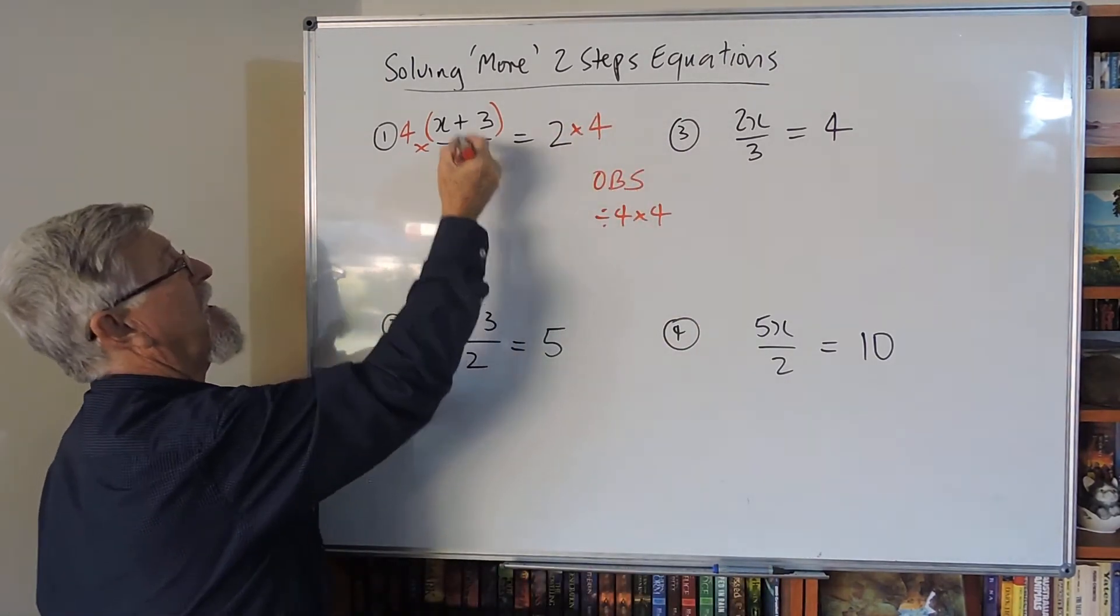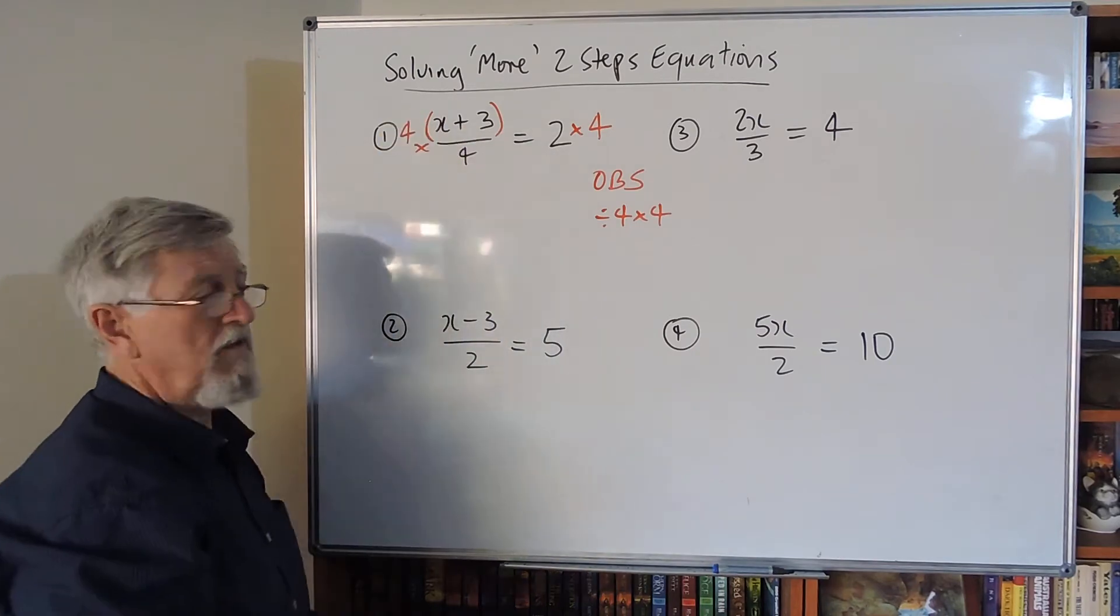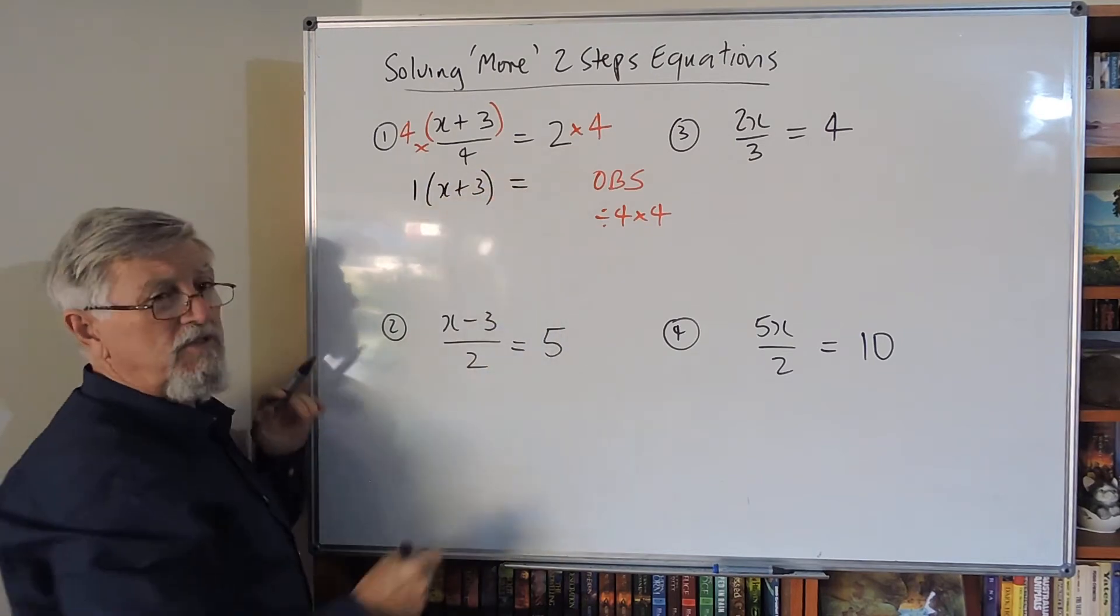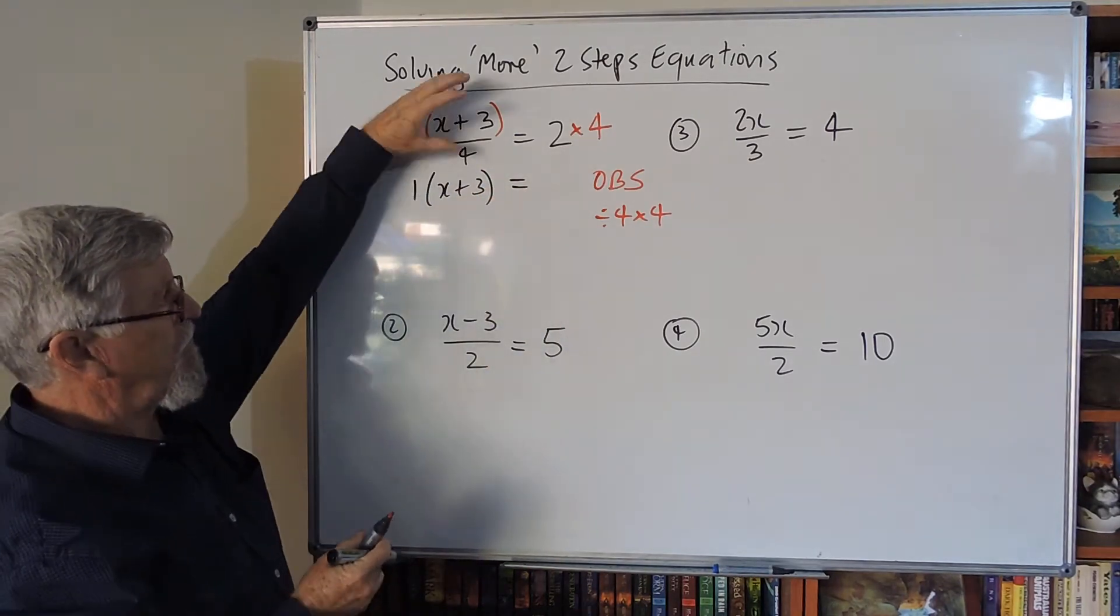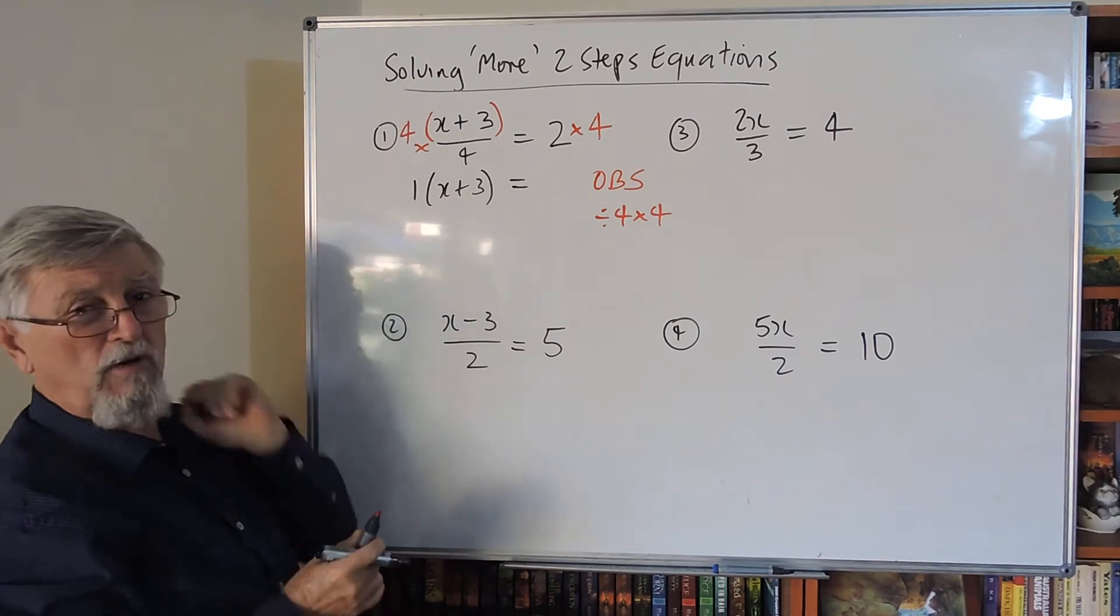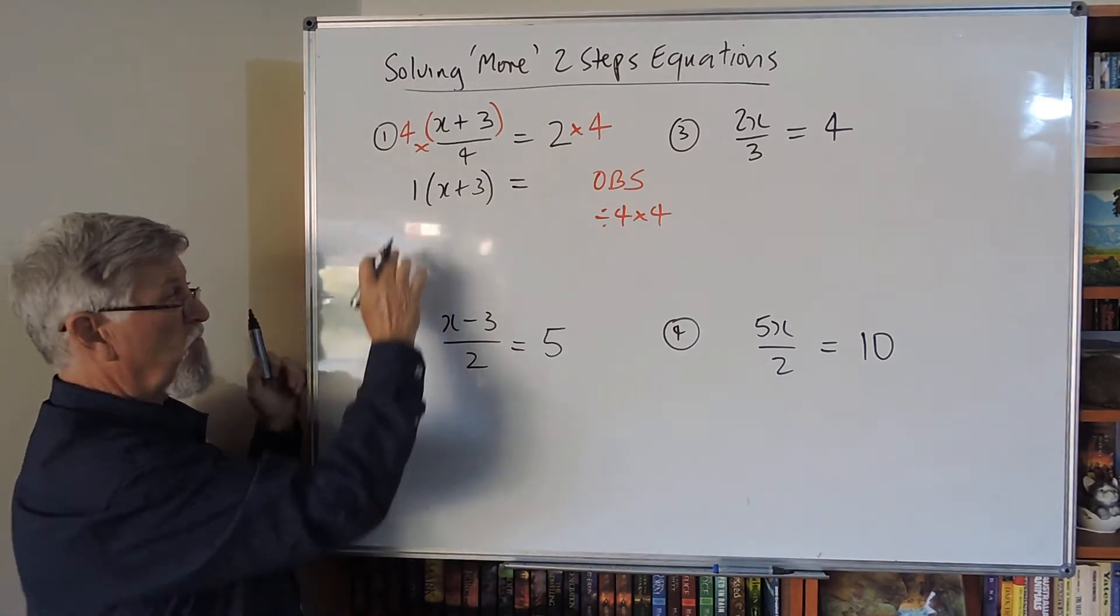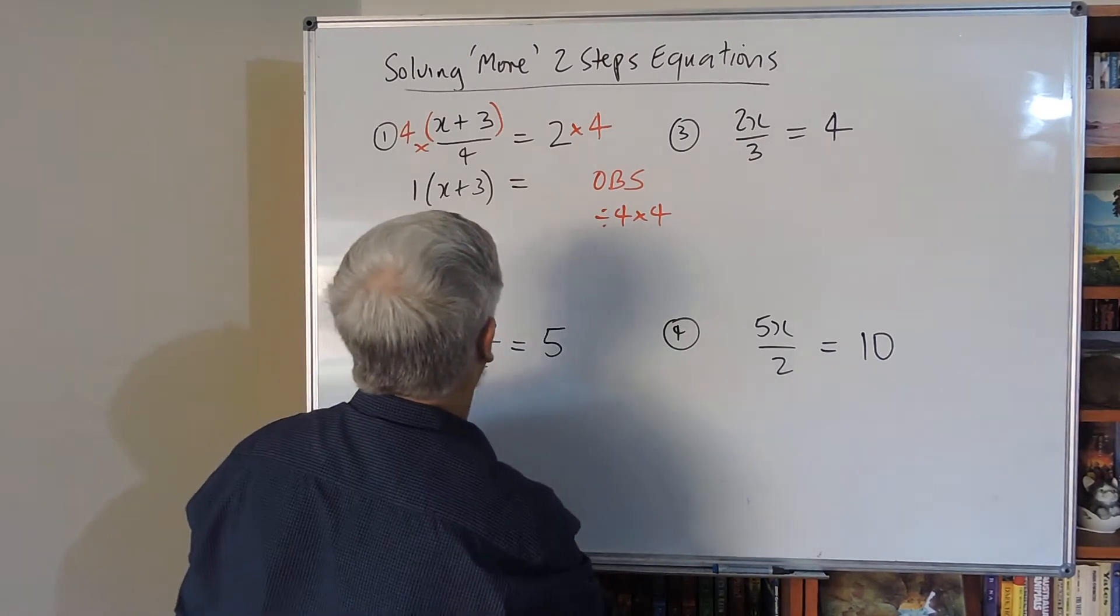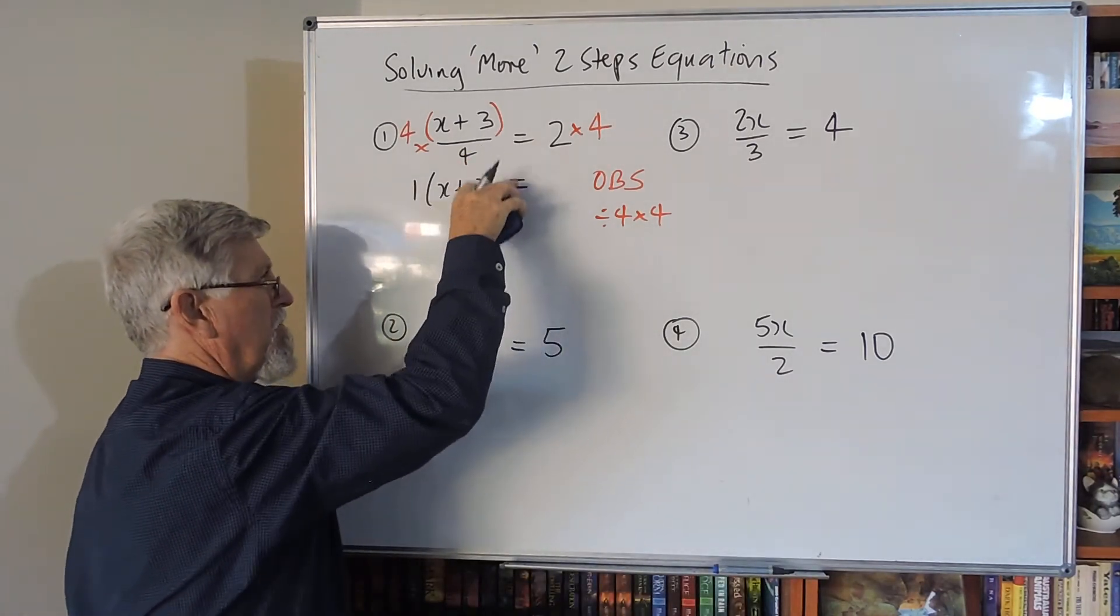And the purpose of it was I can then go four into four goes once, so really I've got one bracket (x + 3). So instead of having this four controlling all that, now I've just got a one controlling it. Interesting part is, one of that is just x and one of three is just three, so if I want to I don't even have to write that bracket there.